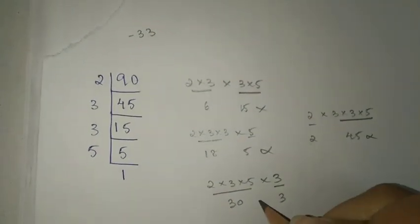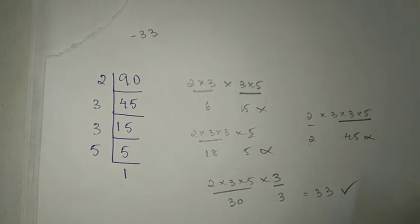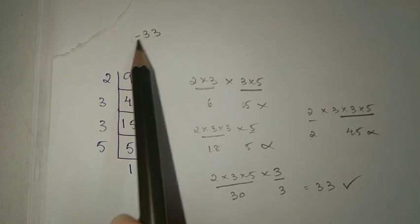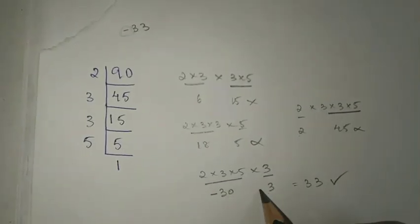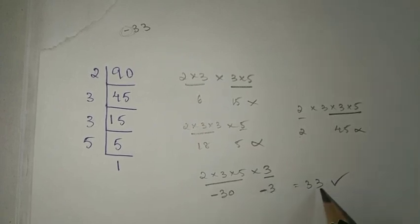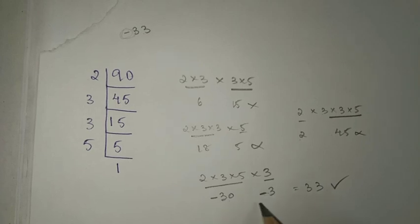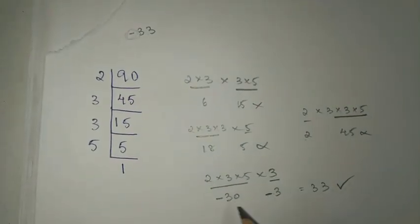30 and 3 when added give 33, but we need minus 33. So both numbers must be negative: minus 30 and minus 3 when added give minus 33.